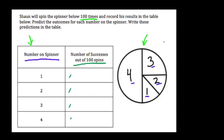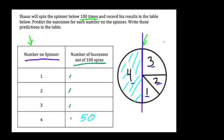With a circle like this we're forced to estimate. This line right here cuts the circle in half, which means region four should be about 50% of the circle. So if we spin this a hundred times, it's reasonable to assume the spinner will land on that region half the time. Half of a hundred trials is 50, so it's reasonable to say it'll land 50 times on that spot.